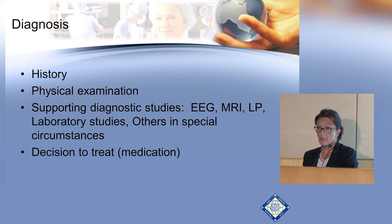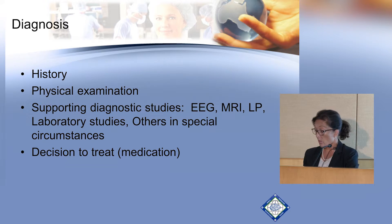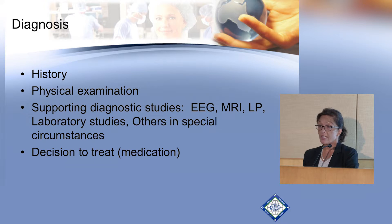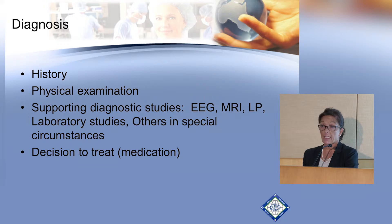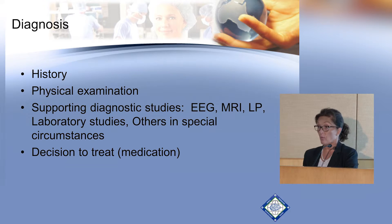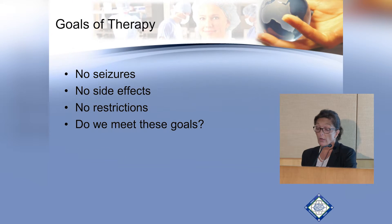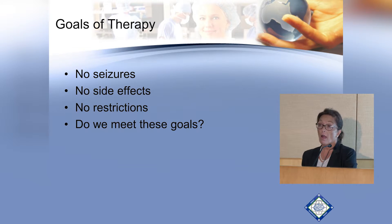The key question is whether it is time to treat. Since one in ten people have a seizure, we don't automatically treat after a single event. However, if they have an abnormal EEG suggestive of a generalized seizure type likely to recur, we may treat after one seizure, and that is usually with medication. Our goals of therapy are: no seizures, no side effects, and no restriction or fear of seizures.